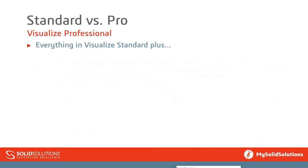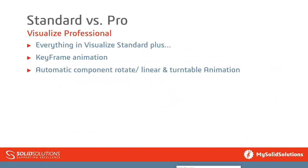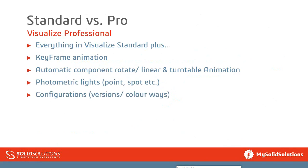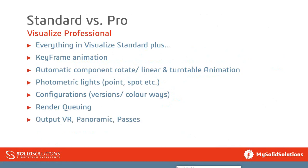Professional is exactly the same as Standard plus keyframe animation, automatic component rotation, linear and turntable animation, and photometric lights — points, spots, and anything else you want around the environment. It also adds configurations — really better called display states — so you can jump between multiple colour and appearance versions of your model. And render queuing, which is quite a big one. You can set up renders at five o'clock, leave at half five, have them run all overnight, and come in the next day to find them done.